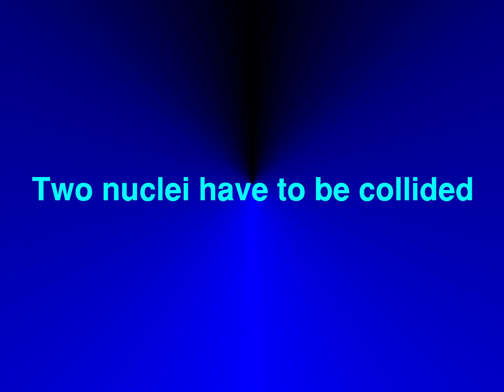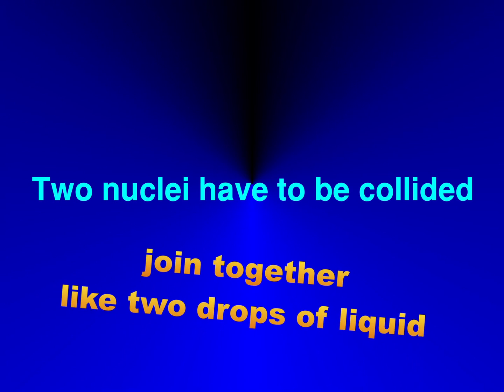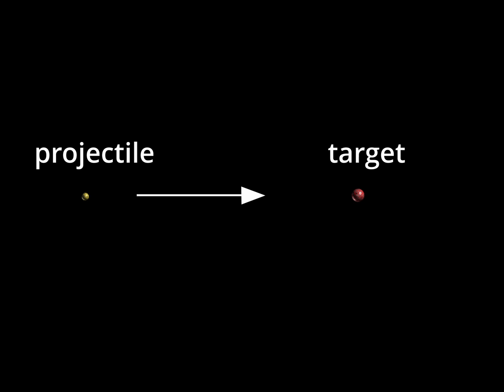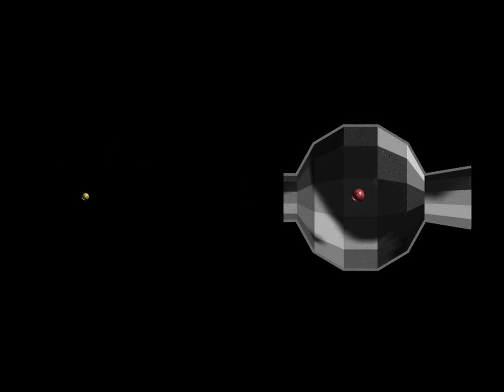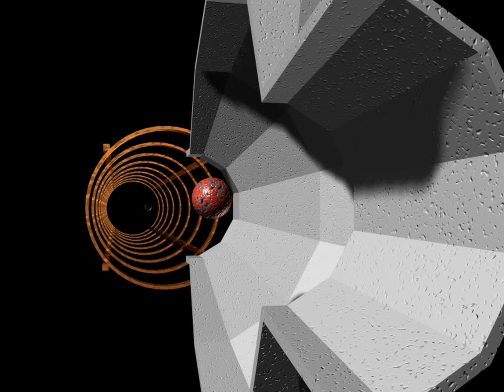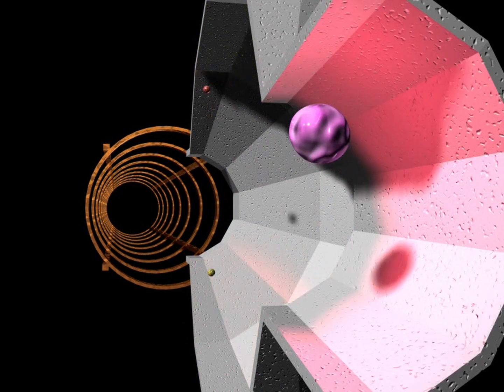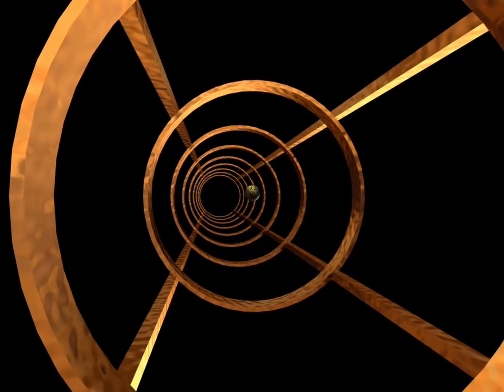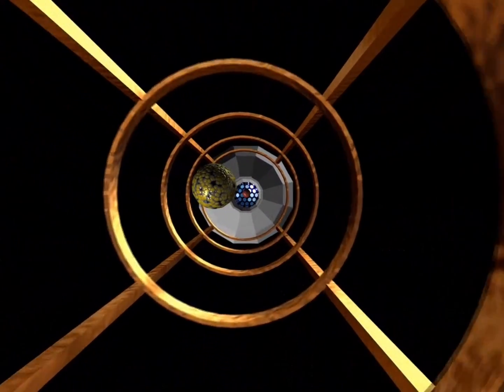So we have to collide two nuclei in such a way that they will not deflect like two billiard balls, but combine like two drops of liquid. The collision will take place in a vacuum. A projectile nucleus will hit a target nucleus. Here is a target chamber. The nucleus will gain a high speed thanks to a device called an accelerator. This is the path of a projectile nucleus flying through a beamline as it approaches the target chamber.